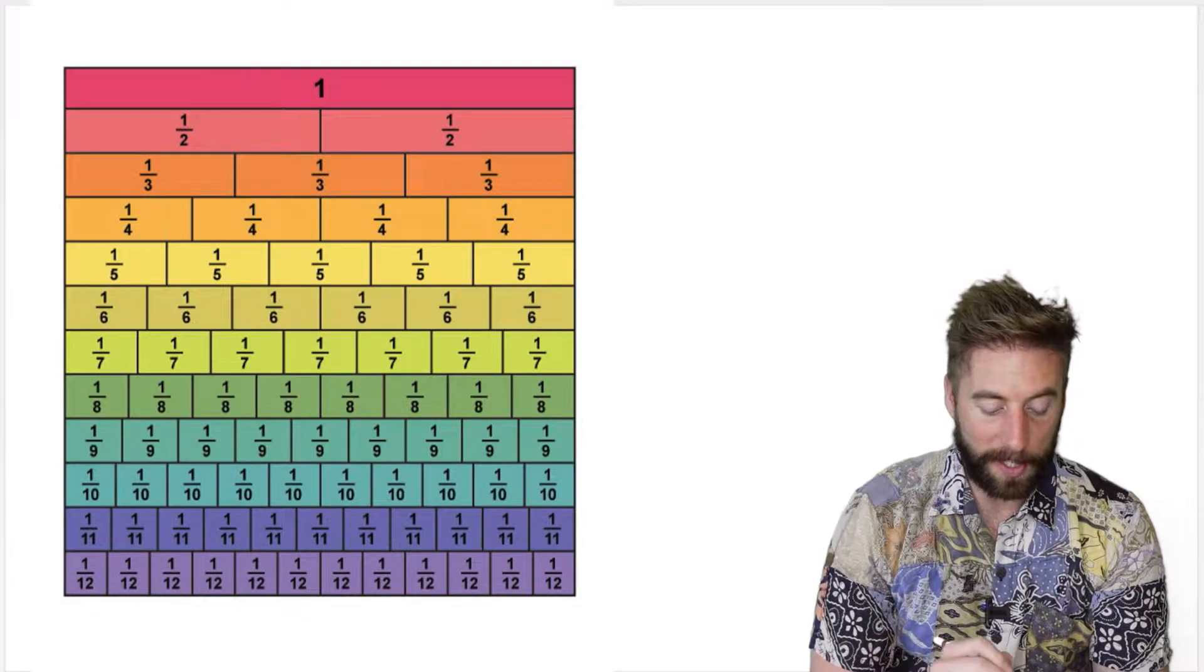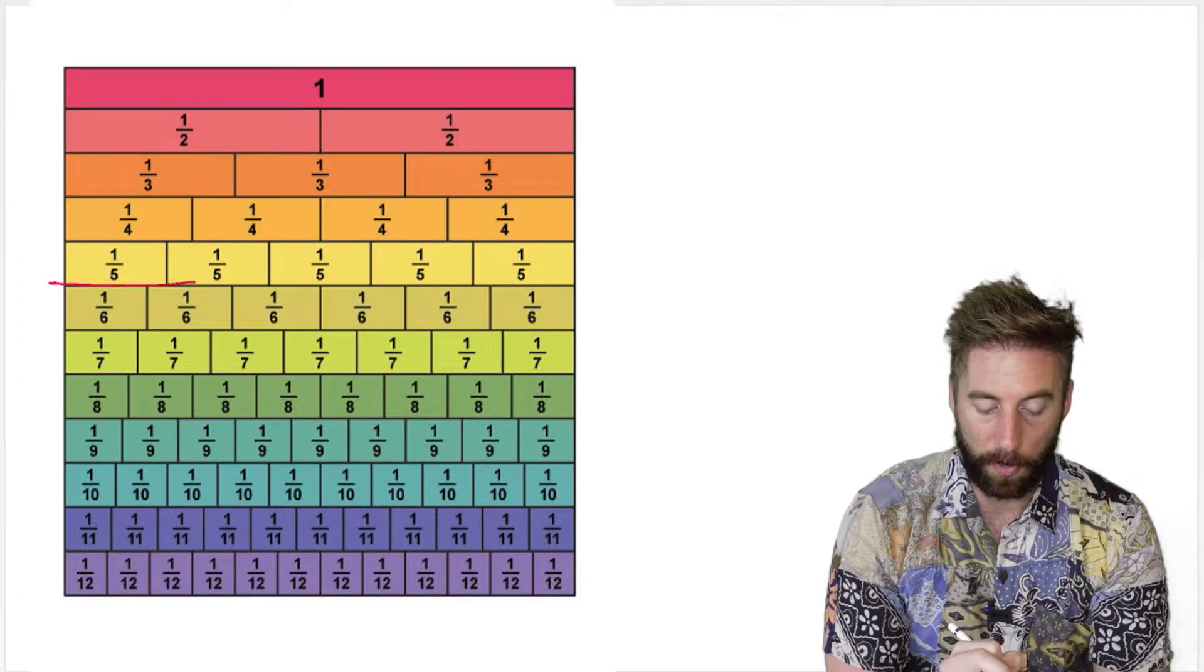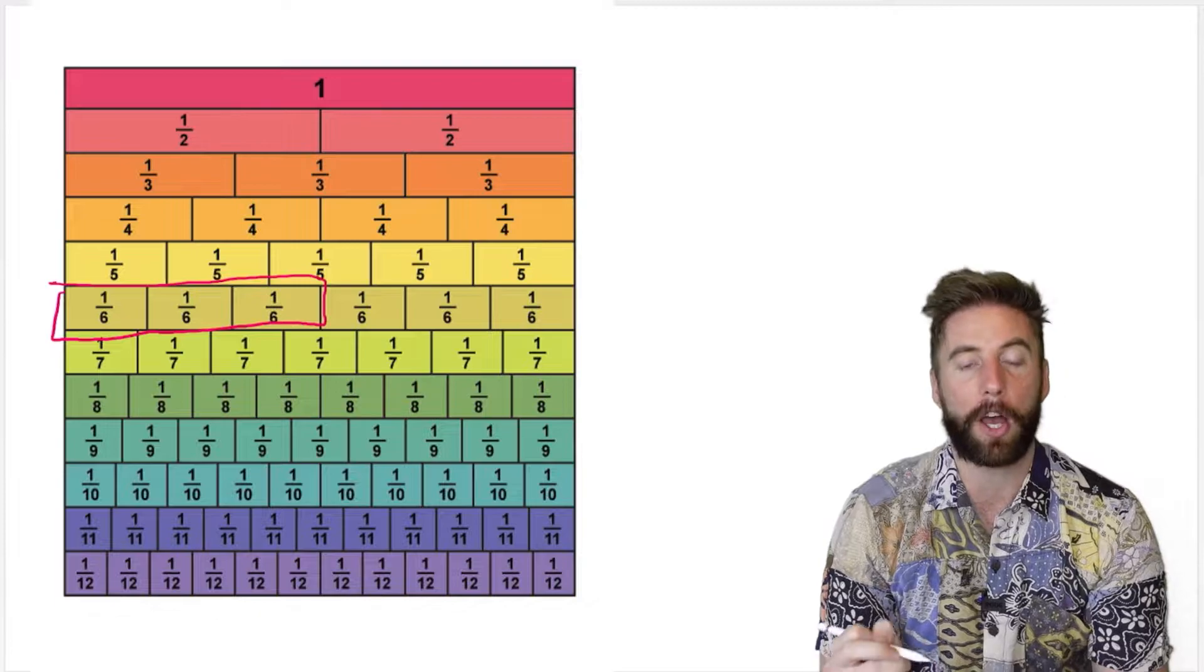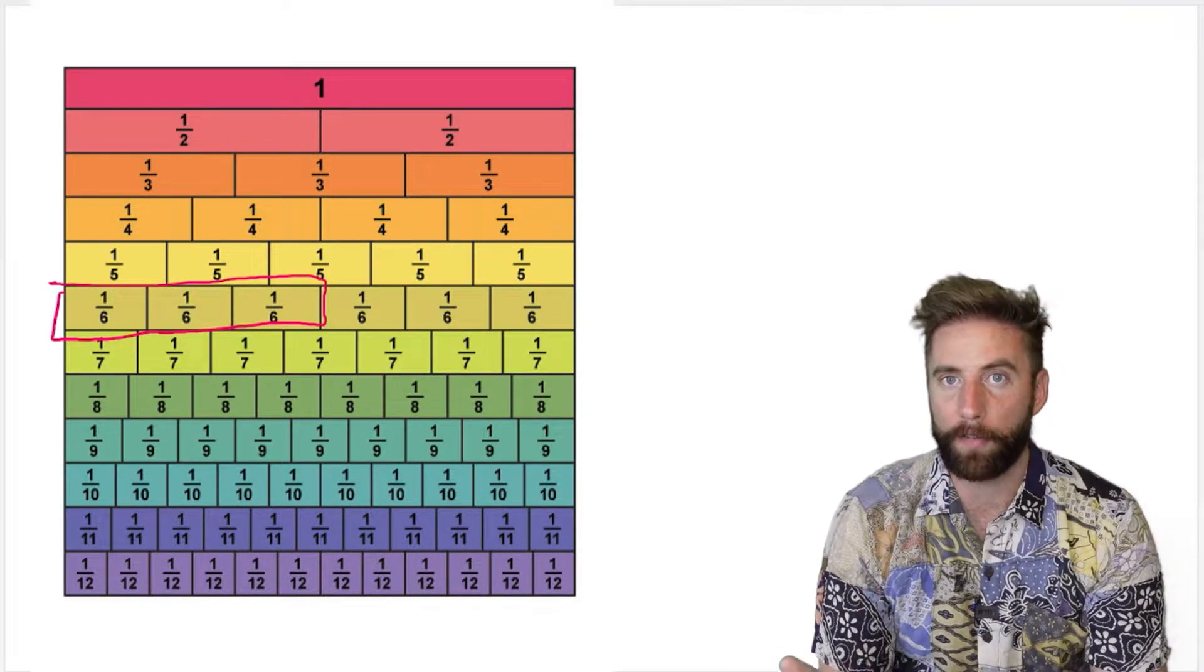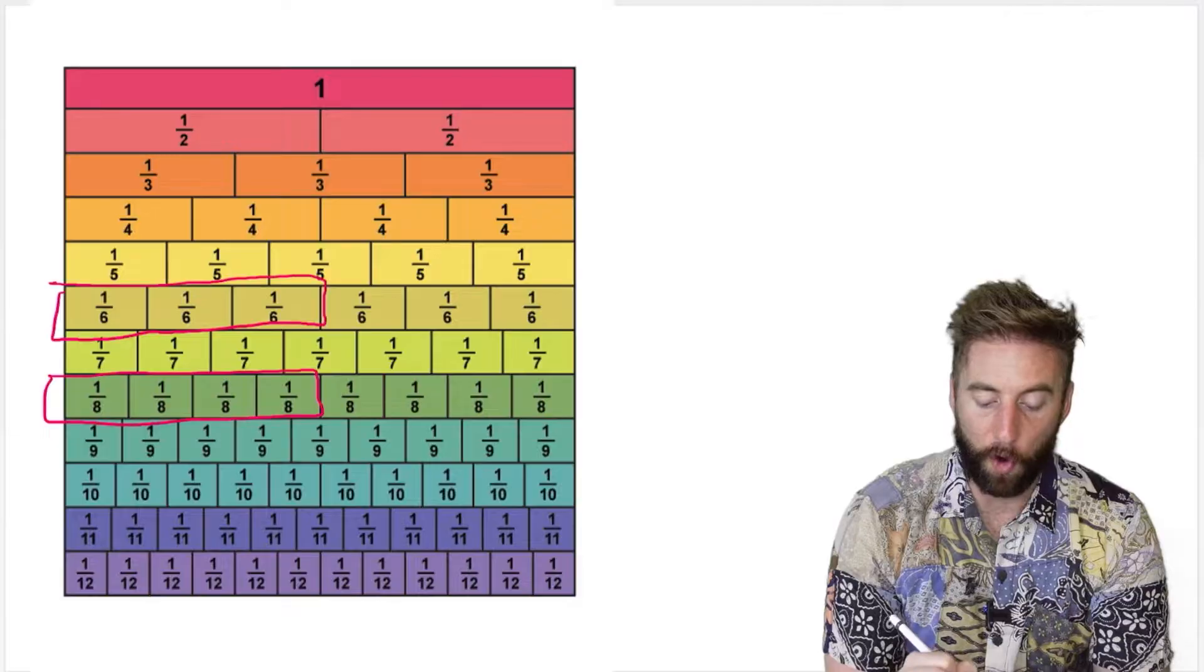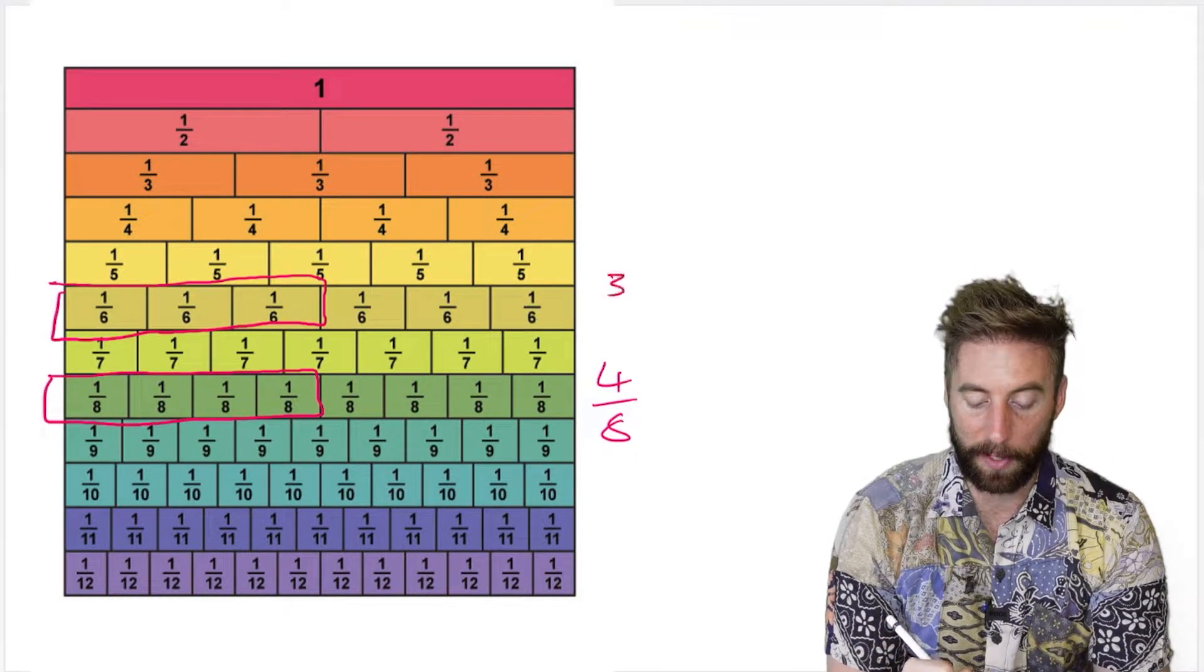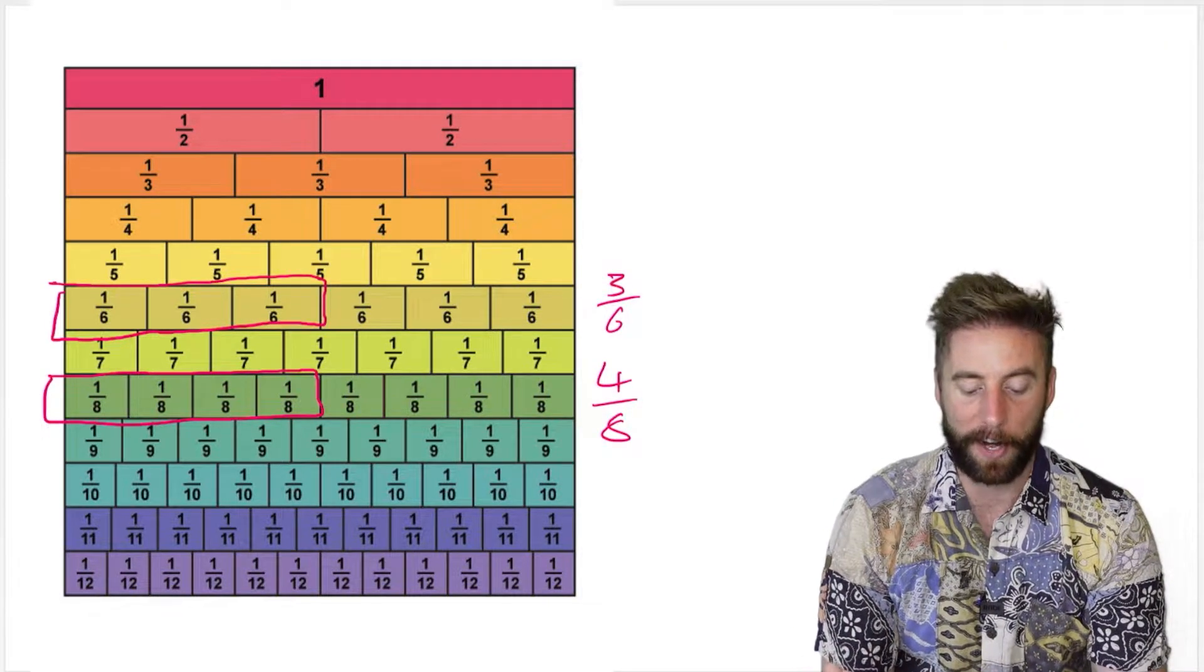This is a fraction wall and we can see our three sixths would be here. I can see it on this row, and three sixths would occupy that amount of my whole. But what I can do is look up or down the fraction wall to find equivalent fractions. I could look down here and see that okay, four eighths is the same as my three sixths. They share the same value but are expressed in a different fraction.